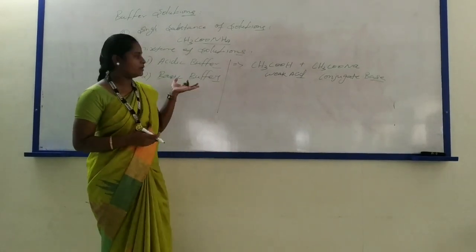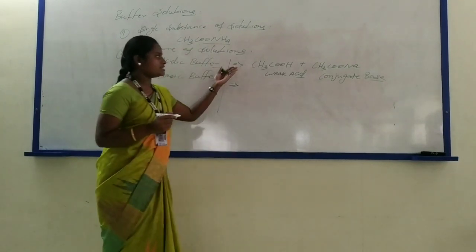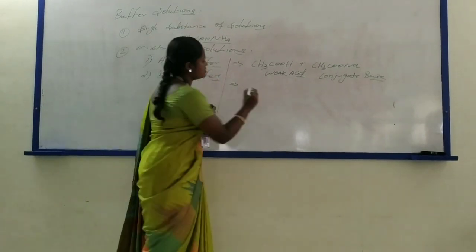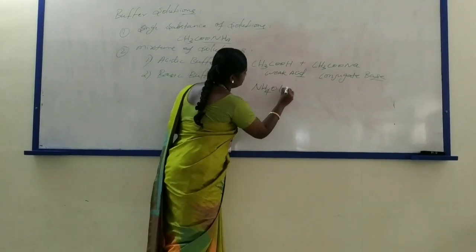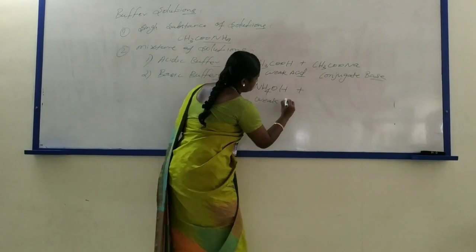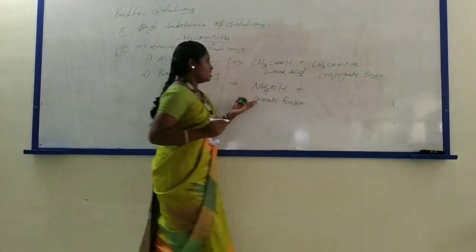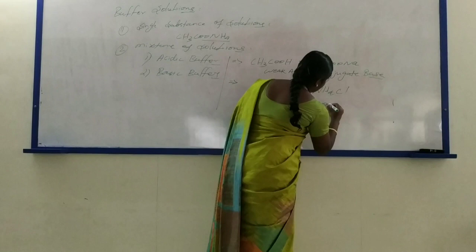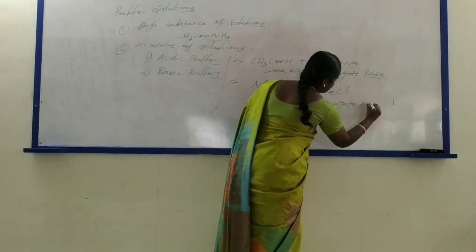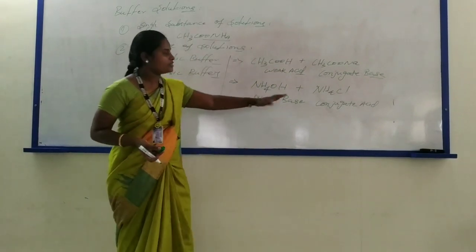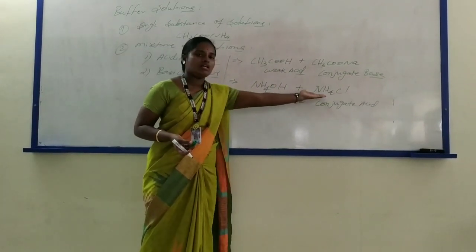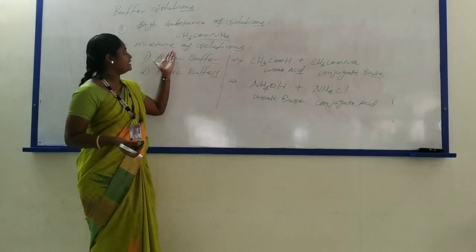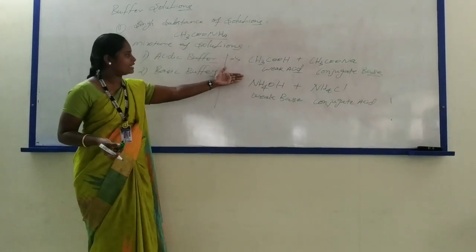Then we move on to the basic buffer. It is similar to the acidic buffer, but here we take a weak base. Ammonium hydroxide is the weak base, and the conjugate acid of the same substance is ammonium chloride. Ammonium hydroxide and ammonium chloride together make the basic buffer solution. These are under the category of mixture of solutions. Now we move on to the action of acidic buffer and basic buffer.